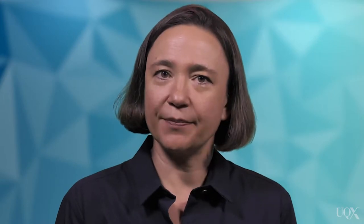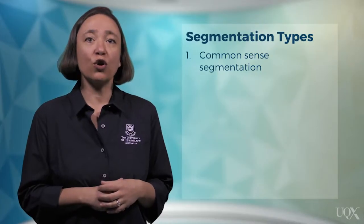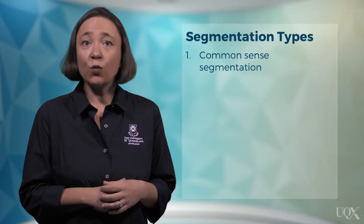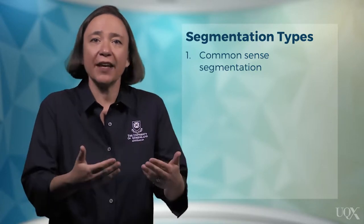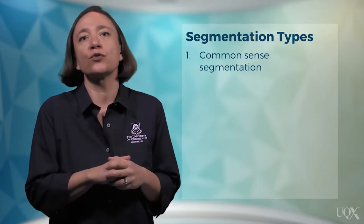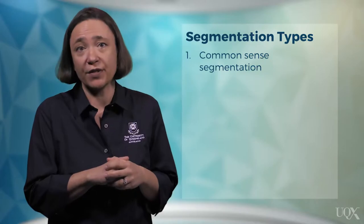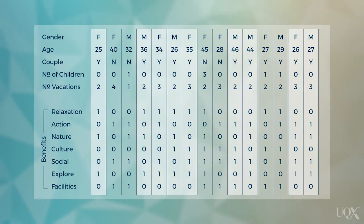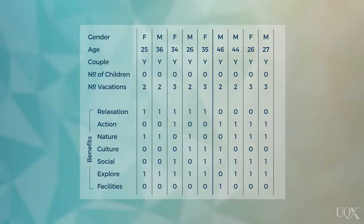But how can we split tourists up? There are two possible ways. We can use what we call common sense segmentation. We do this when we know in advance which characteristic to use to group tourists. Looking at this survey data set, for example, we can choose couples without children as a market segment. Then we use any other information we have about them to describe them.